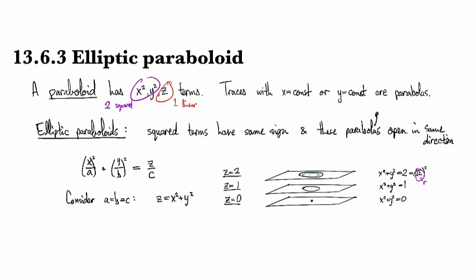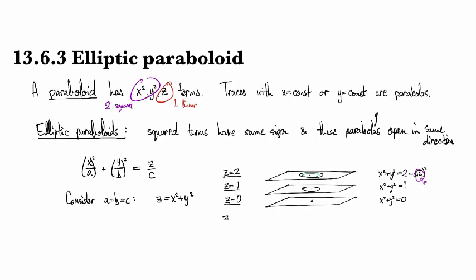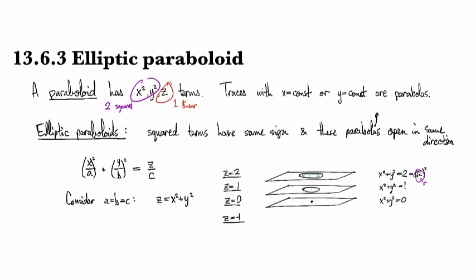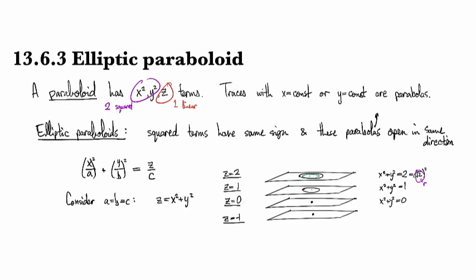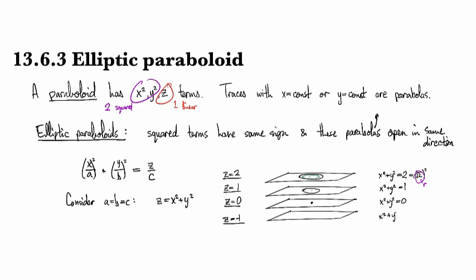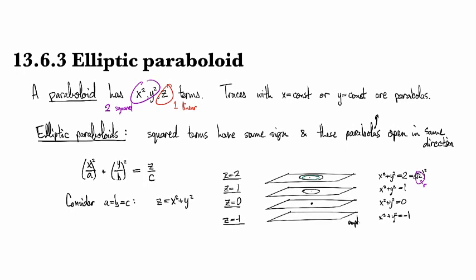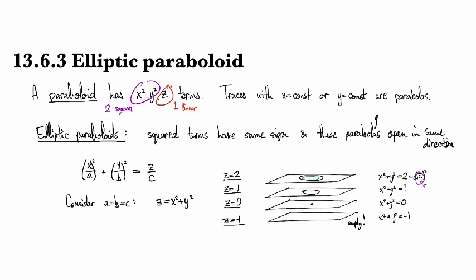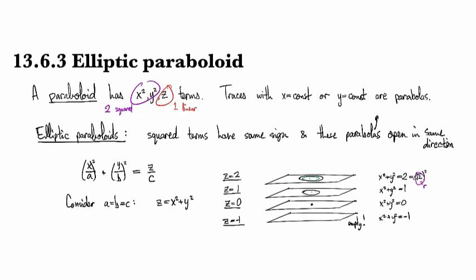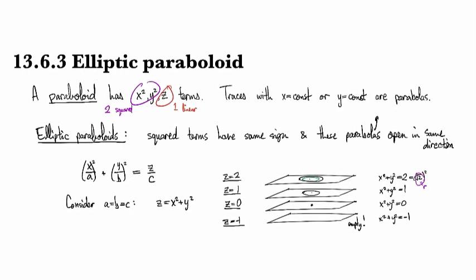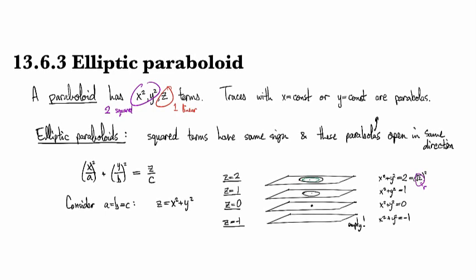And if I were to go to minus 1 down below, what do I have? I've got x squared plus y squared equals minus 1. There's no solutions to that. So it's empty. So that means that if I slice horizontally at level z equals minus 1, I just miss the surface. There's no cut. So that's useful information to know. This whole thing extends only upward.